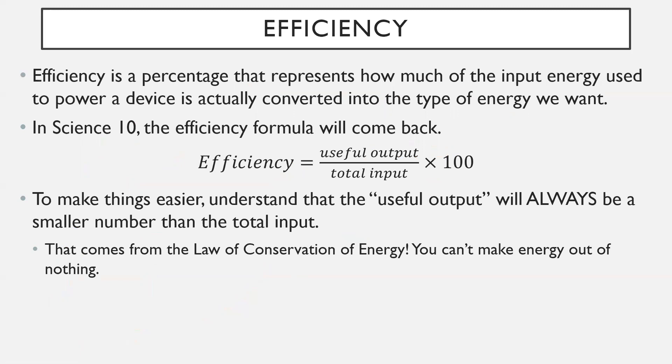Efficiency is the next thing up. Efficiency is a percentage that represents how much of the input energy used to power a device is actually converted into the type of energy we want. Basically, it's just your output energy divided by your input energy and then times by 100. The output is what's actually getting produced. So in other words, if you were using a toaster, the output energy is the amount of thermal energy being produced, whereas the input energy would be the amount of electricity it's using. Your output energy is always going to be the smaller number. You will never have a bigger number on the top in an efficiency formula, because if you did, that would mean that you created energy out of nothing, which you can't make energy out of nothing.